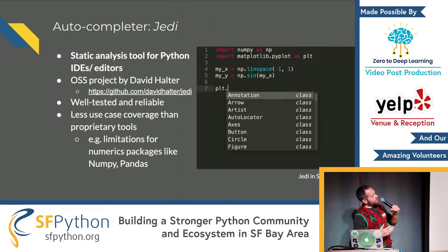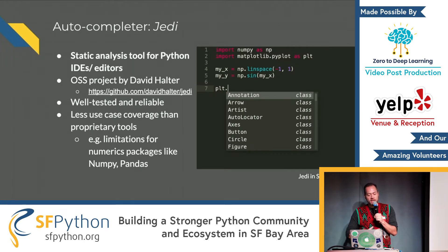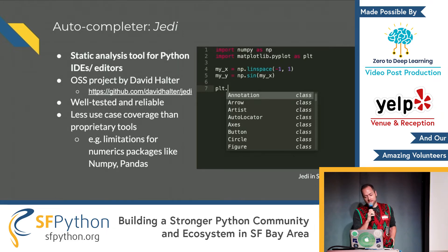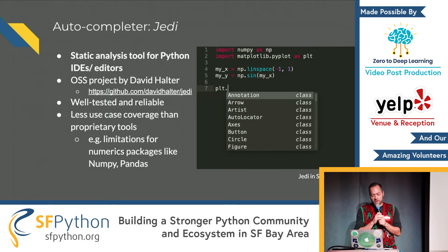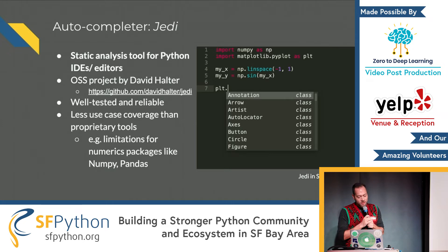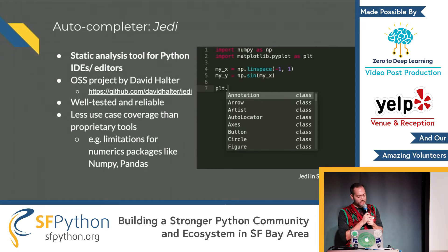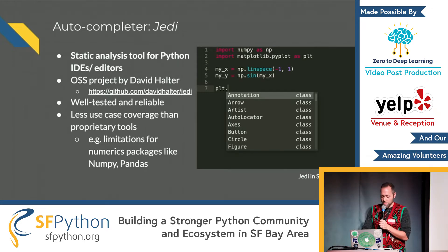Here's an example of a well-known autocompletion tool that's been around for a little while. It's called JEDI — an open source project by David Halter. It's called a static analysis tool because it uses exactly what we talked about. It works with Python IDEs and editors. It's well tested and reliable. It has less use case coverage than some of the newer proprietary tools, but it's still an awesome option.